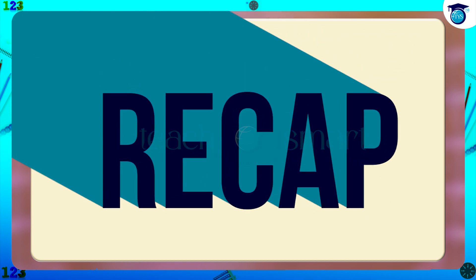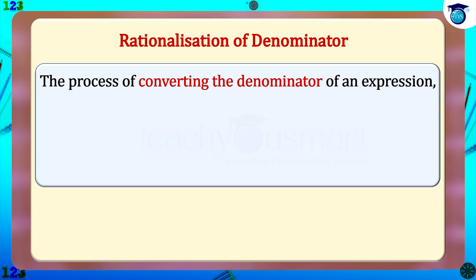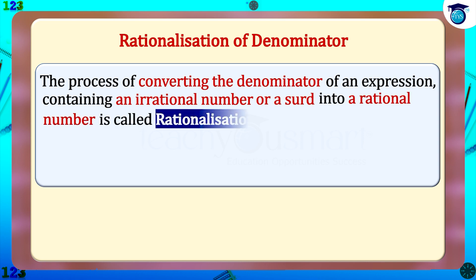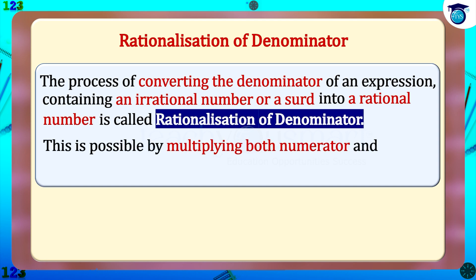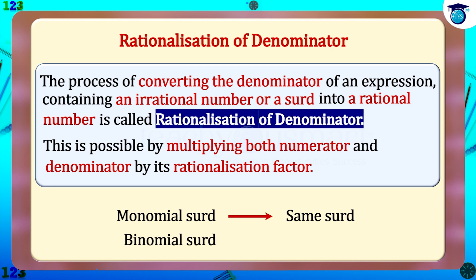Let's recall what we discussed today. We have seen the rationalization of denominator. The process of converting the denominator of an expression containing an irrational number or a surd into a rational number is called rationalization of denominator. This is possible by multiplying both numerator and denominator by its rationalization factor. For a simple surd, the simplest rationalization factor is the surd itself, but for a binomial surd, the rationalization factor is its conjugate.